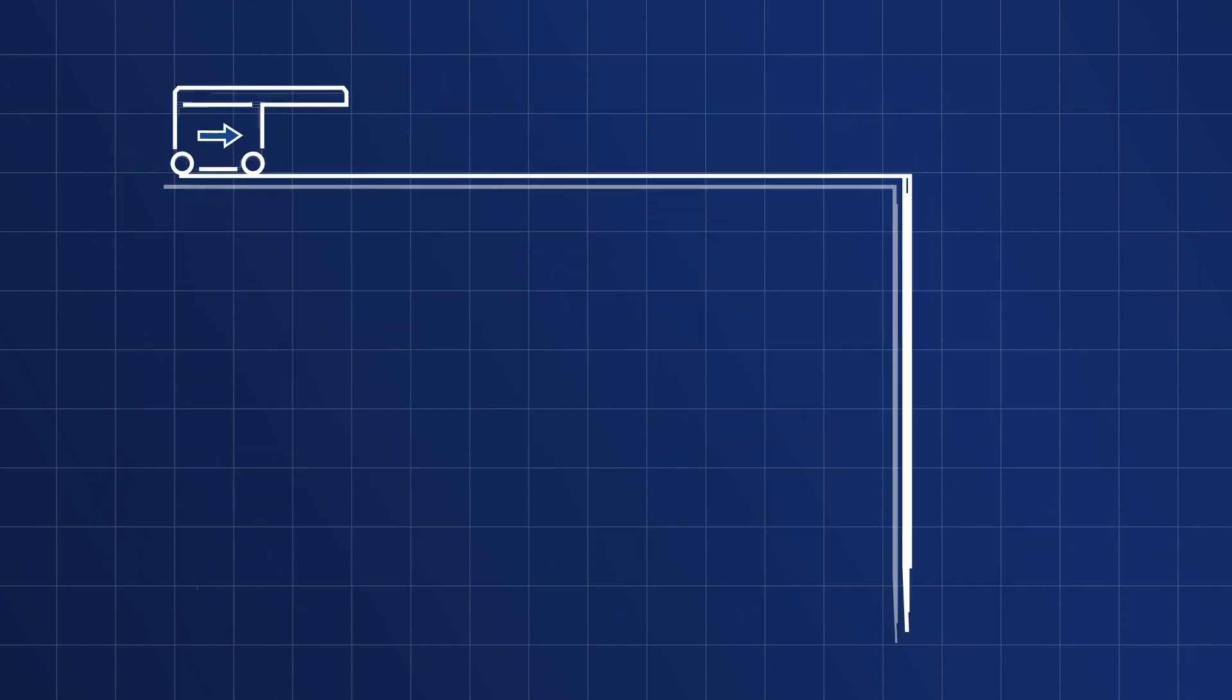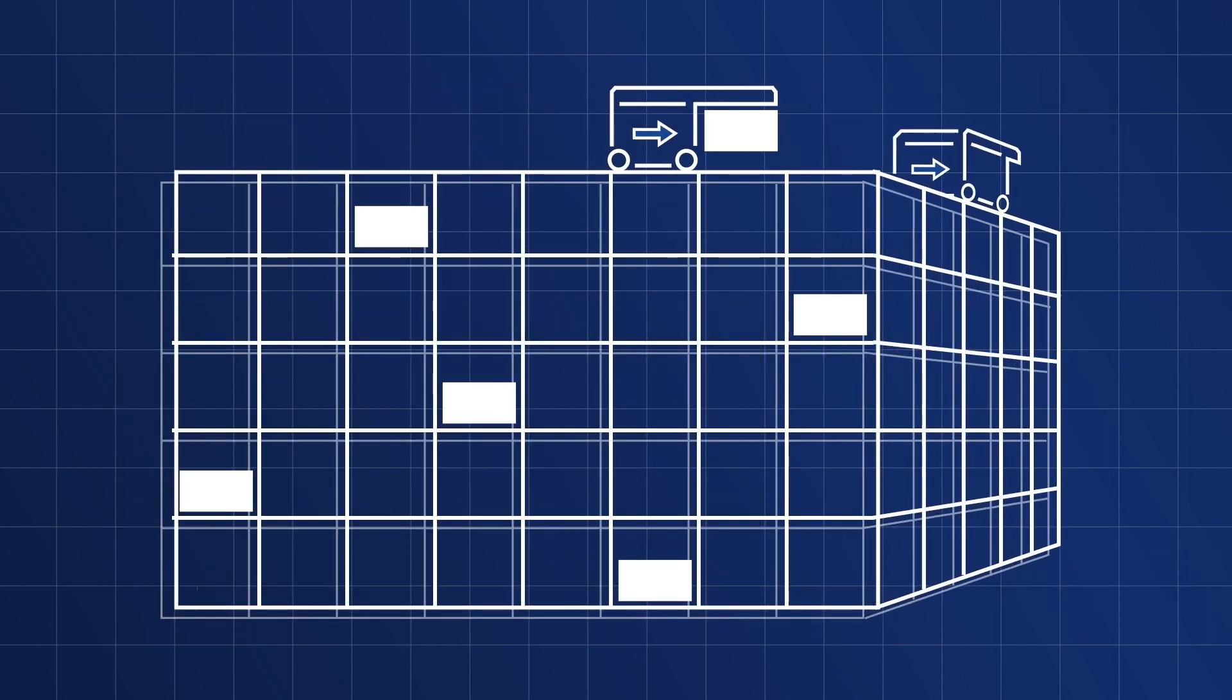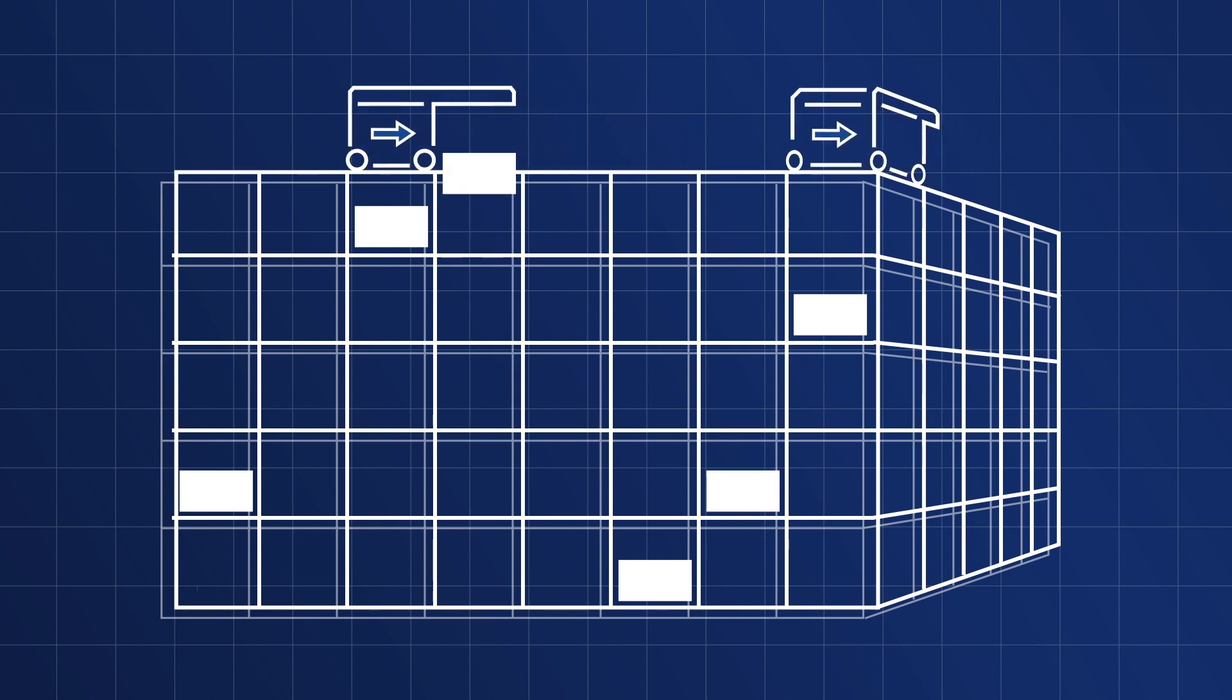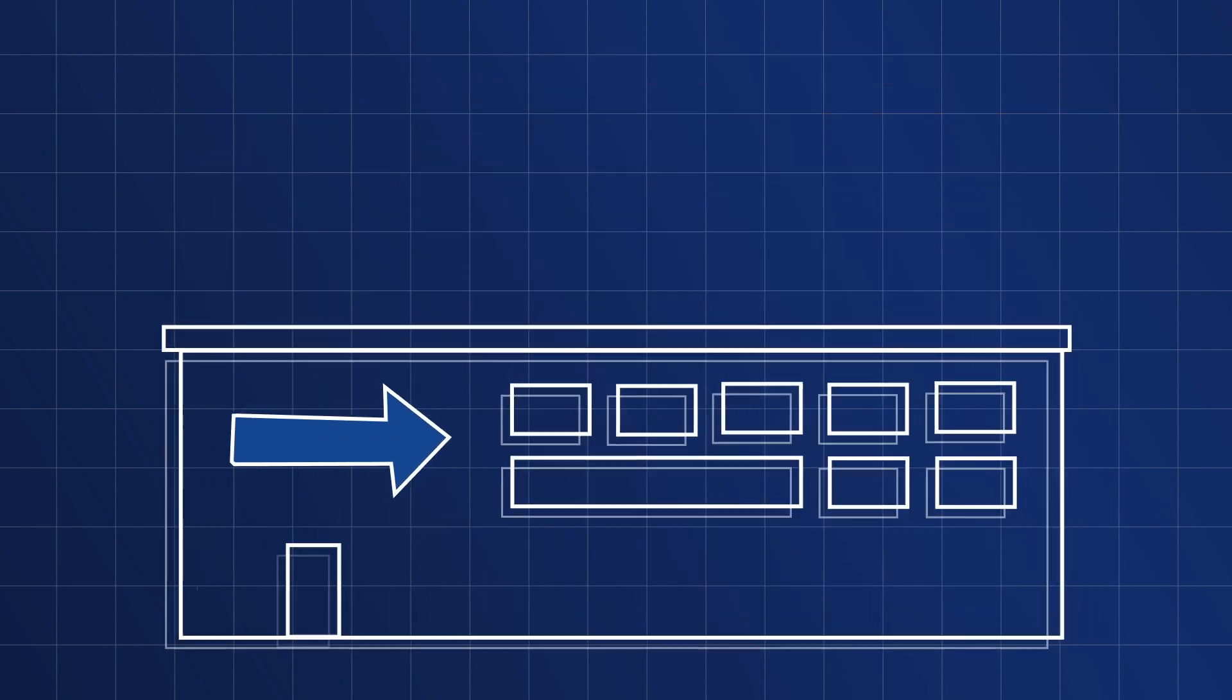One of the best options for adding automation to a micro-fulfillment solution is AutoStore. Their modular systems with extreme density and flexibility make them a great option to customize automation to meet specific requirements or accommodate facility limitations.